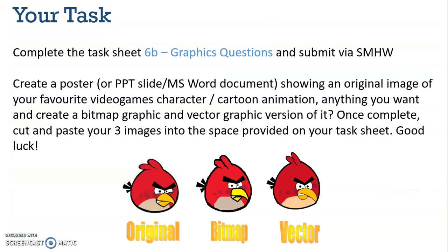Your task for this lesson is to complete the task sheet attached to the notification called 6B graphics questions and submit that via Show My Homework. You also have to create a poster — that could be a PowerPoint slide or Microsoft Word document — showing an original image of your favourite video game character, cartoon animation, or anything you want, and create a bitmap graphic and a vector graphic version of it. Once completed, cut and paste your three images onto the space provided in your task sheet on the last page, called 'original bitmap and vector graphics challenge'.